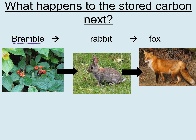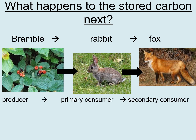The bramble leaves are then eaten by a rabbit, and the rabbit is then eaten by the fox. The carbon moves from one organism to the next as it's eaten. A bramble — or any plant or algae that can photosynthesize — is called a producer, because it produces its own food using photosynthesis.